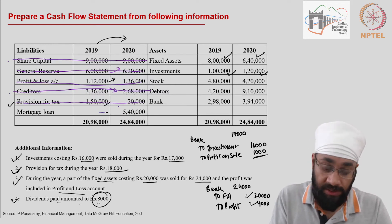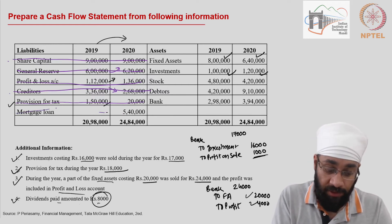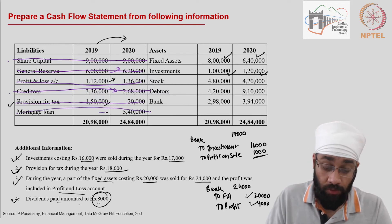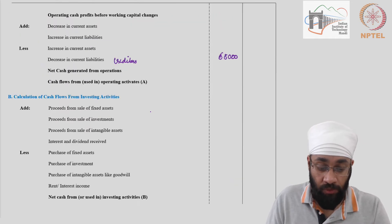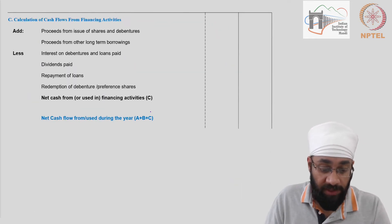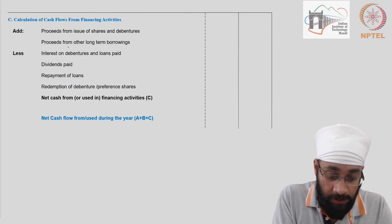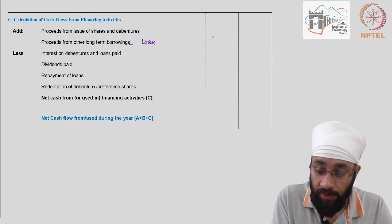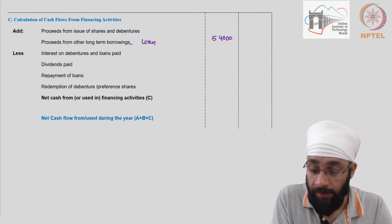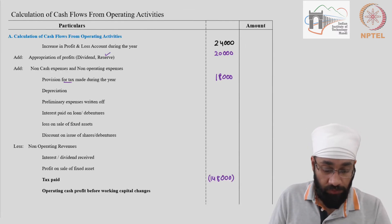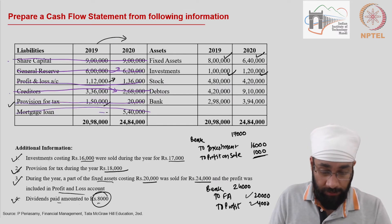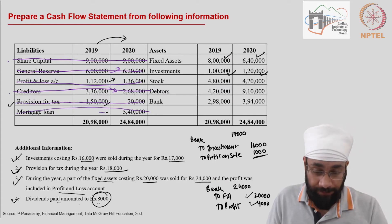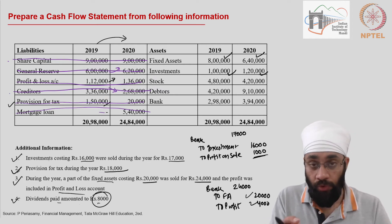Mortgage loan started at nil and then 540,000 was raised. This goes to financing activities — proceeds from long-term borrowings: loan of 540,000, an inflow because the loan is being raised.